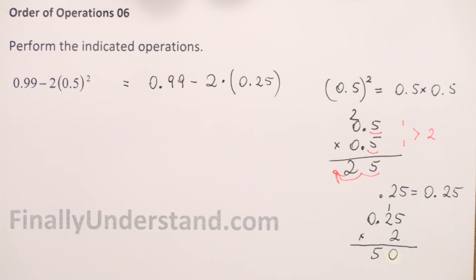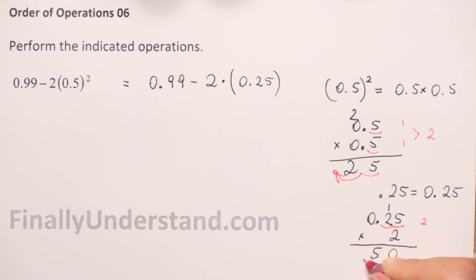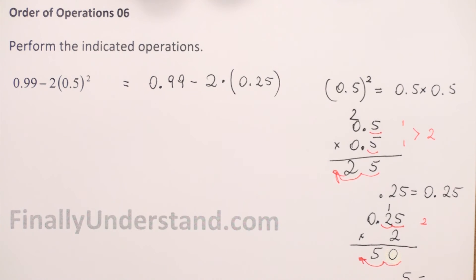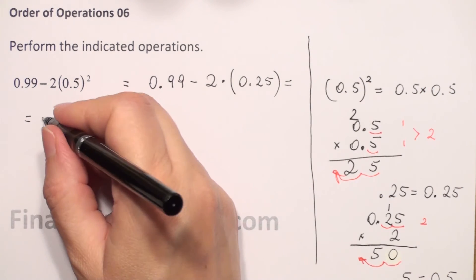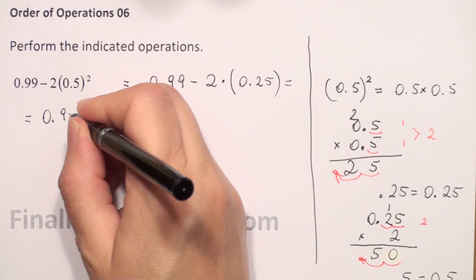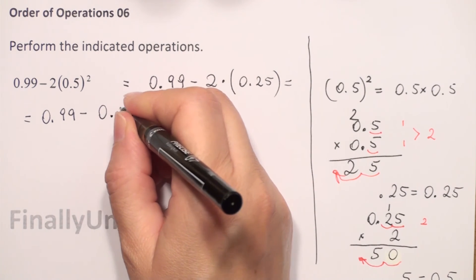Now we count the decimal places. The first number has two digits after the decimal point, and the second number has none, so we have two decimal places total. Counting from right to left, the decimal point goes before 5, giving us 0.50, or simply 0.5. So our expression becomes 0.99 minus 0.5.